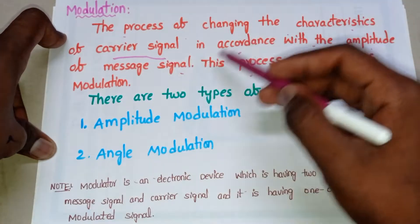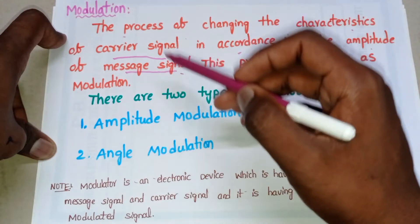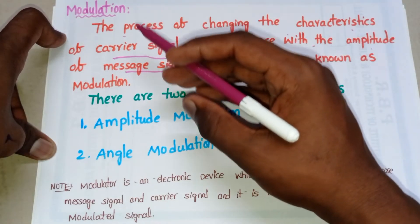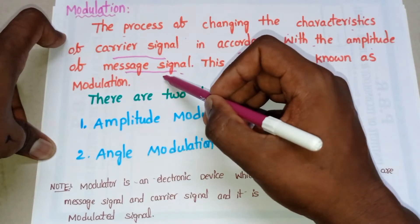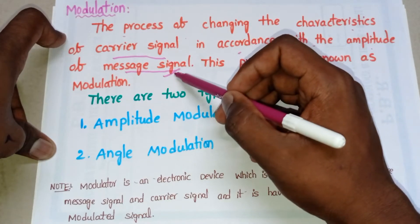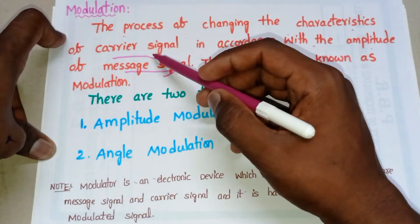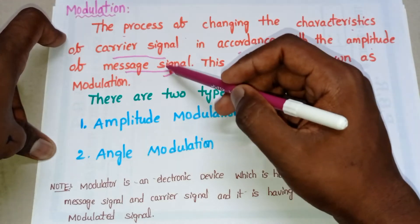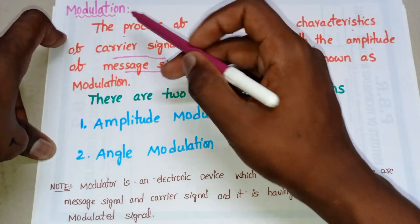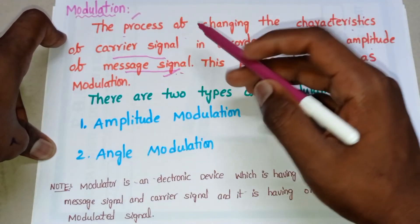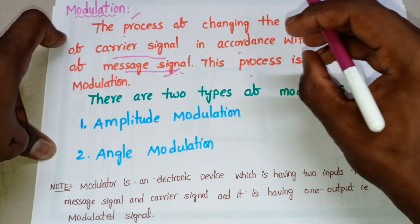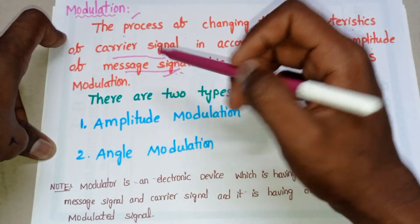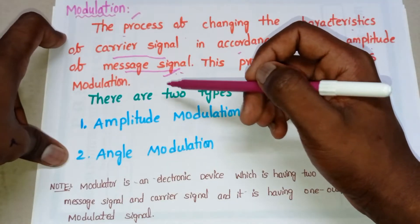What is a carrier signal and what is a message signal? As already discussed in our previous video, the message signal is the signal which carries information to be transmitted. The carrier signal is the signal used to help carry this message signal. Modulation is the technique which superimposes the message signal onto a high-frequency carrier signal.